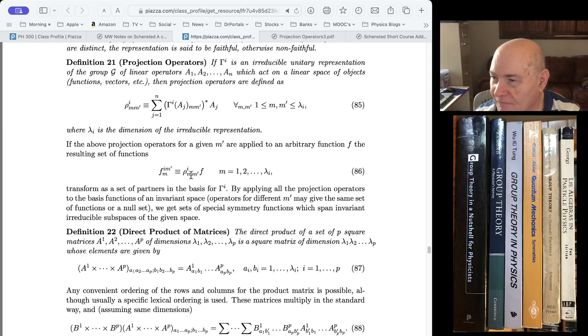So the columns of these things, M being a row index and M prime being a column index, will turn out the columns of these indices all transform into each other. And so they're a set of partner functions or a basis for that set of special symmetry functions.